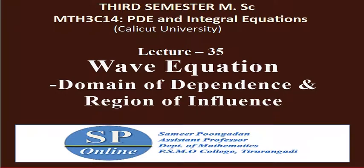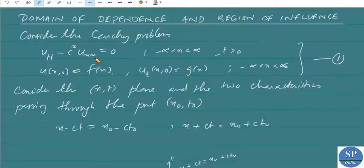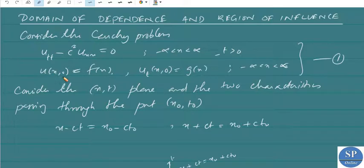In this lecture we are going to discuss the topic: domain of dependence and region of influence of the Cauchy problem of the wave equation. Consider the Cauchy problem u_tt minus c² u_xx = 0 for minus infinity < x < infinity, t > 0, with conditions u(x,0) = f(x), u_t(x,0) = g(x) for minus infinity < x < infinity.